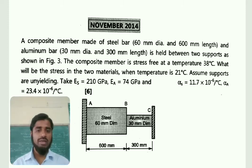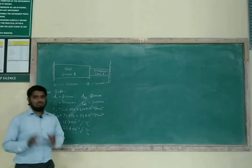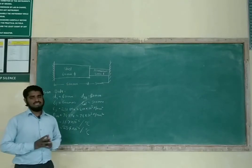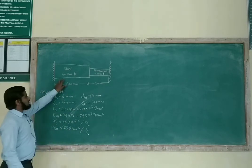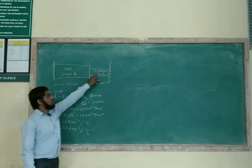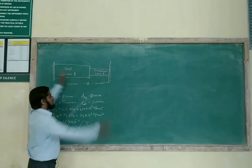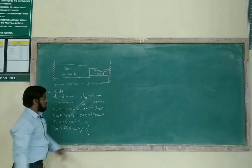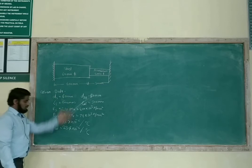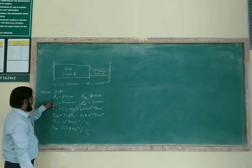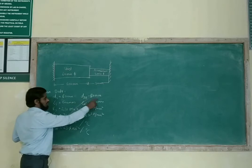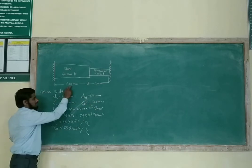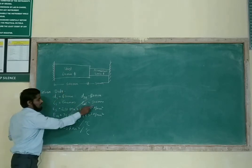Let us see how to calculate this type of problem in detail. Whatever data is given, put it down like this. The diameter of the steel bar is 60 mm, aluminium 30 mm; length of steel 600 mm, length of aluminium 300 mm.